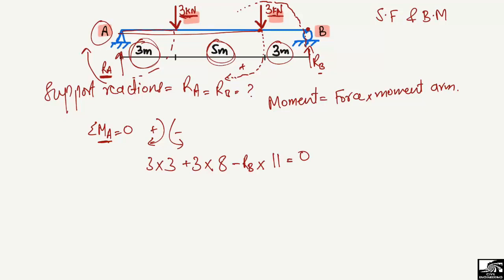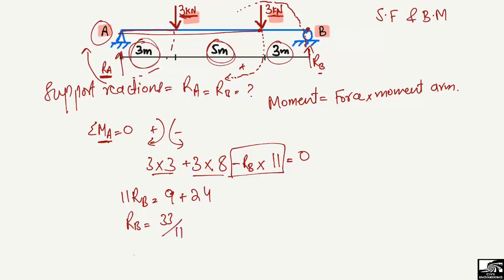Setting the summation of moments about A equal to zero, we get: 11·RB = 3×3 + 3×8 = 9 + 24 = 33. Dividing both sides by 11, we get RB equal to 3 kilonewton.